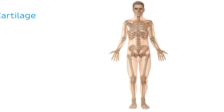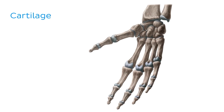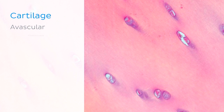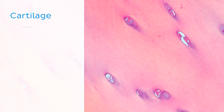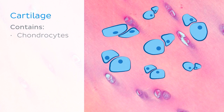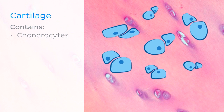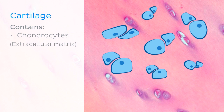Cartilage is one of the types of connective tissue that is found in your body. It is an avascular, flexible tissue containing cartilage cells known as chondrocytes that secrete an extracellular matrix in which they reside.